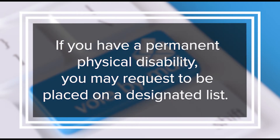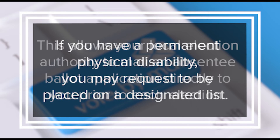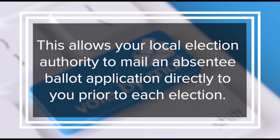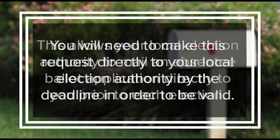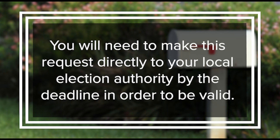If you have a permanent physical disability, you may request to be placed on a designated list. This allows your local election authority to mail an absentee ballot application directly to you prior to each election. You will need to make this request directly to your local election authority by the deadline in order to be valid.